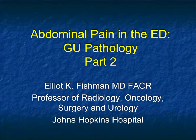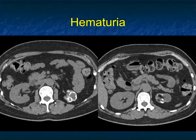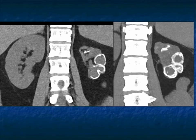Hi, this is Elliot Fisherman and welcome to Part 2 of Abdominal Pain in the ED, focusing on GU pathology. I left you with this case before. The patient has a small left kidney with diffuse calcification. Looking at the coronal views or on the MIP imaging, it really is a small atrophic kidney with dense calcification — it's not simply stone disease.